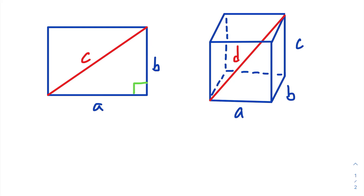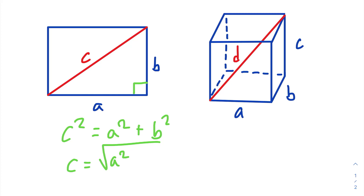And if it's a right triangle, then we can use the Pythagorean theorem. So C squared is equal to A squared plus B squared. And if we take the square root of both sides, we get that C is equal to the square root of A squared plus B squared.